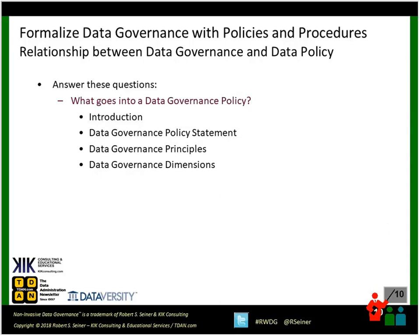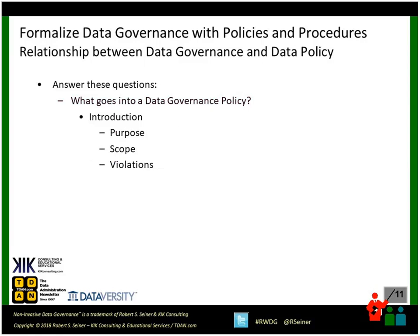So what are some of the things that organizations include when they put together a data governance policy? There are usually a bunch of different sections. There might be an introduction, a policy statement, core principles and guidelines, and then how we're going to measure whether the data governance policy is effective and whether people are following it. We want to talk to people in the organization and see if these components make sense to them, and make certain that we add those components to the data governance policy that are important for our organization.